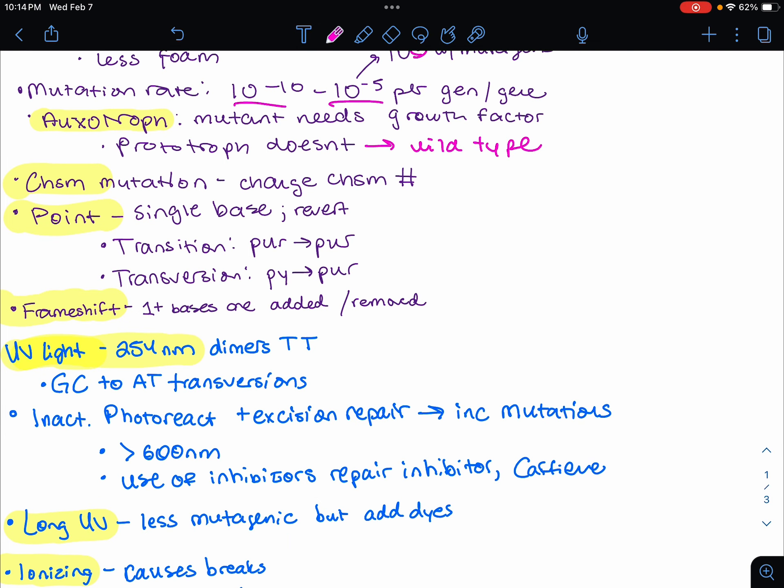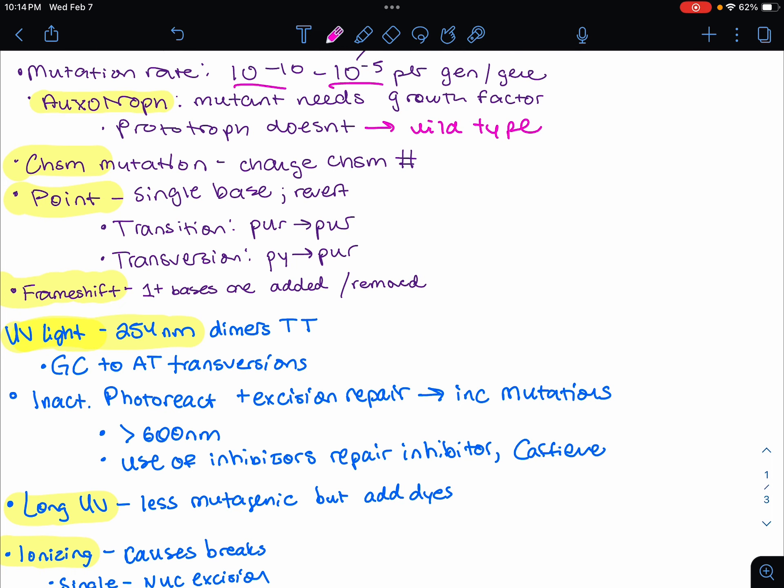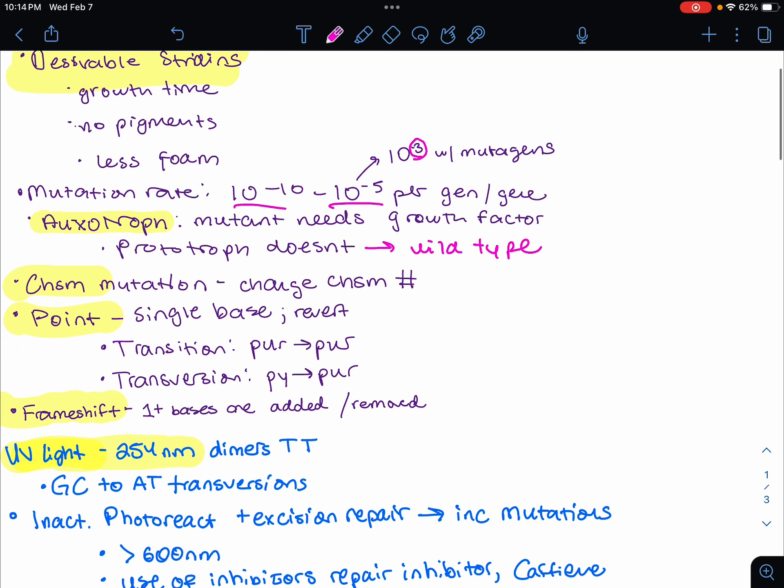The first slide we need to look at has some numbers on it. The mutation rate: in usual settings, they have spontaneous mutation. The bacteria will have 10 to the negative 10th to 10 to the negative 5th mutations per generation and per gene. However, when we add a mutagenic agent, this is going to increase that rate from 10 to the negative 5 to 10 to the negative 3, so we have a higher chance of mutants.